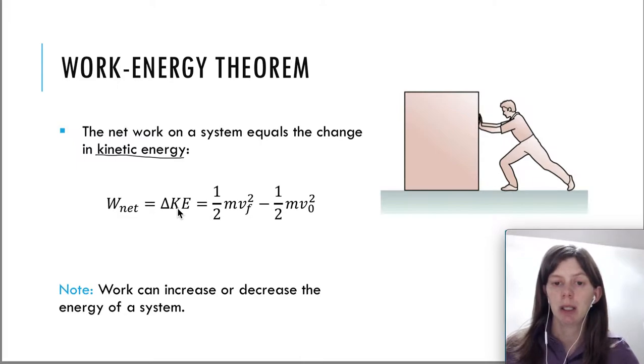But I skipped the derivation. You can look it up if you want to. But what looks like a brand new equation here that says that a network done on a system or on an object equals the change in this quantity, one-half mvf squared minus one-half mv initial squared. This is nothing new. It comes from just the manipulation of Newton's second law and the kinematic equations.